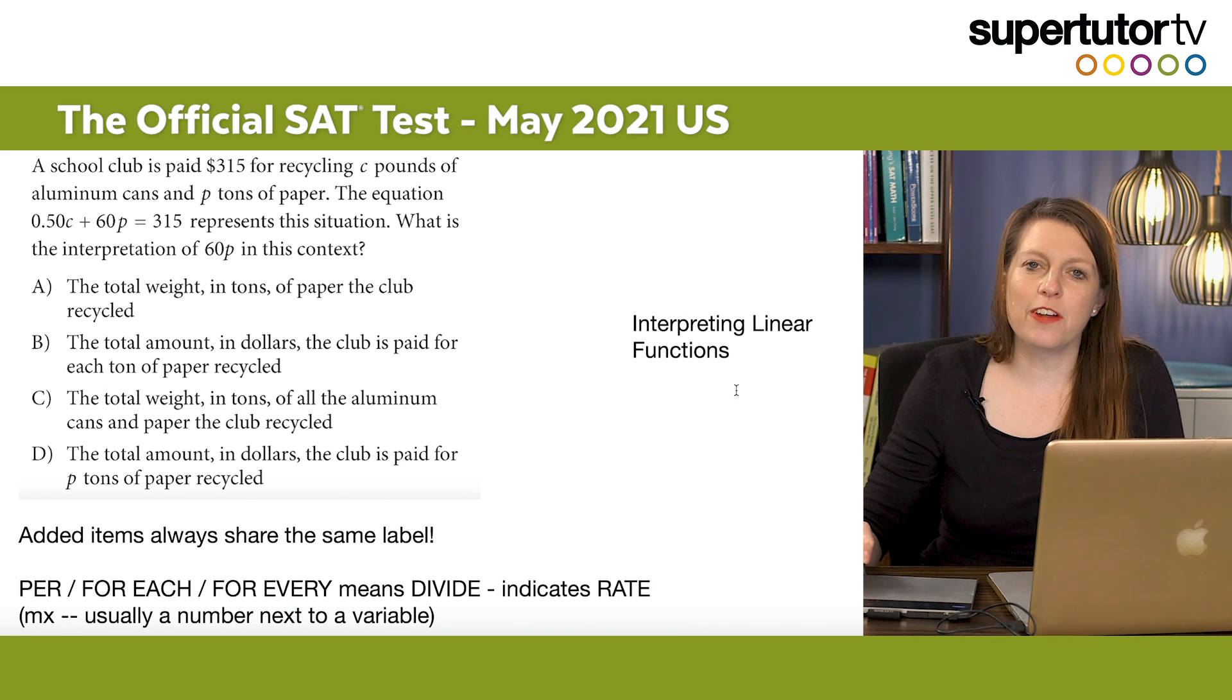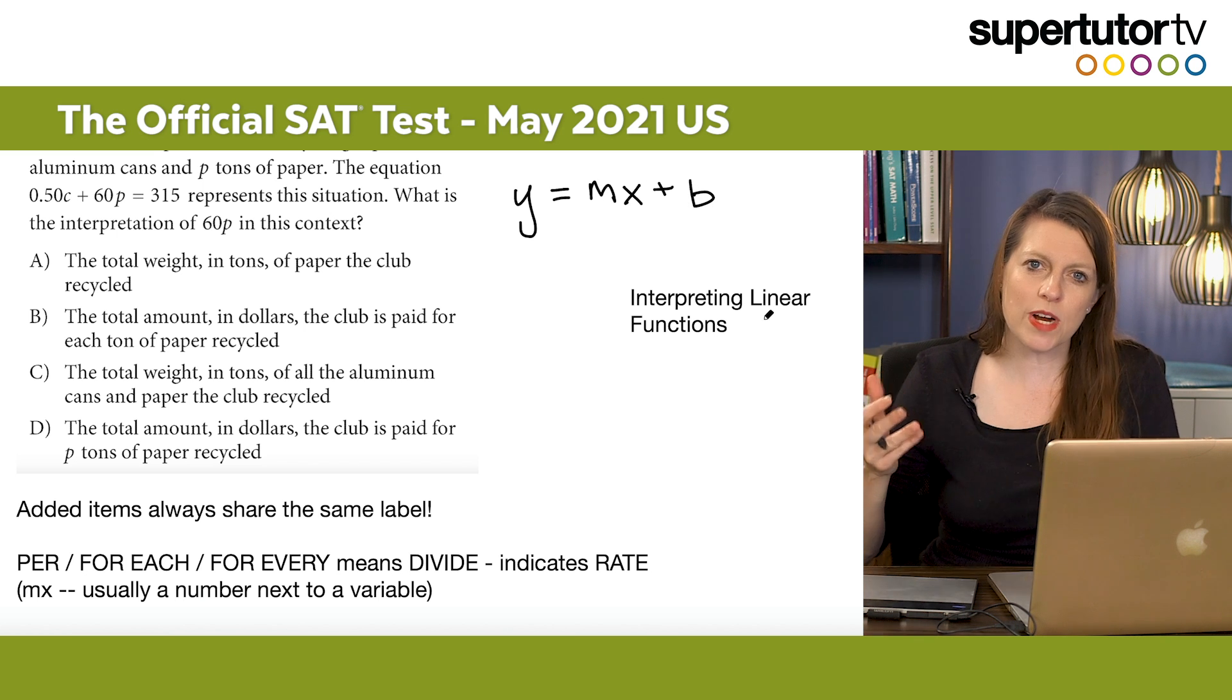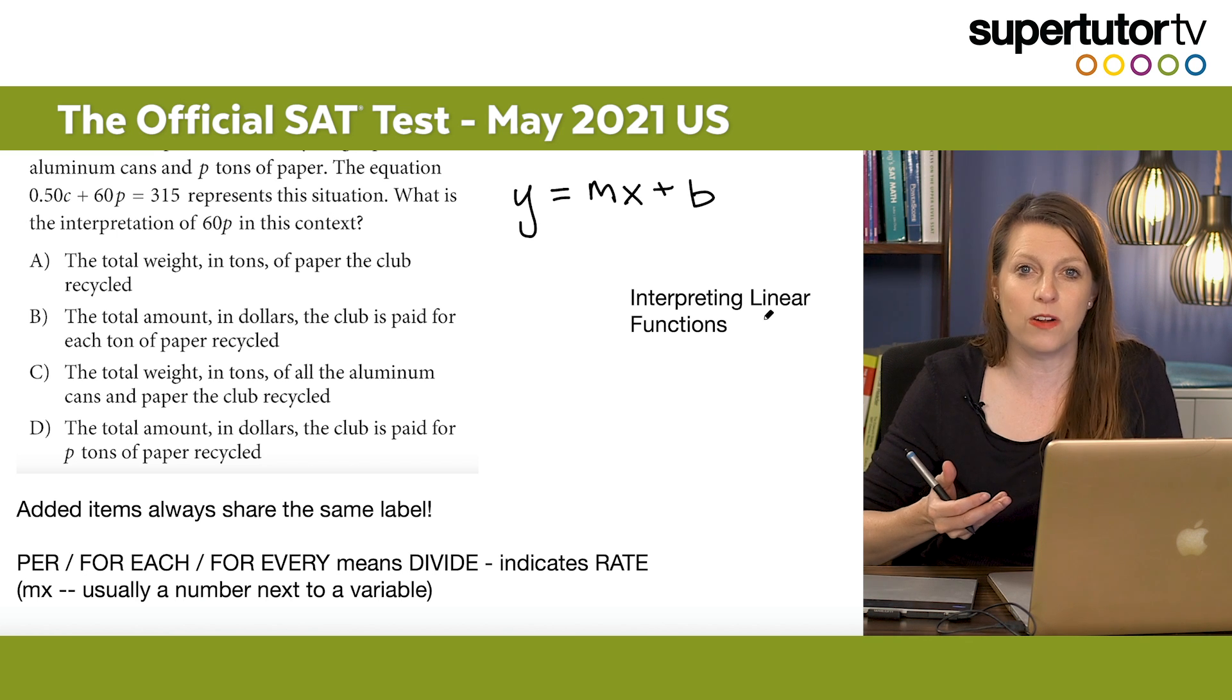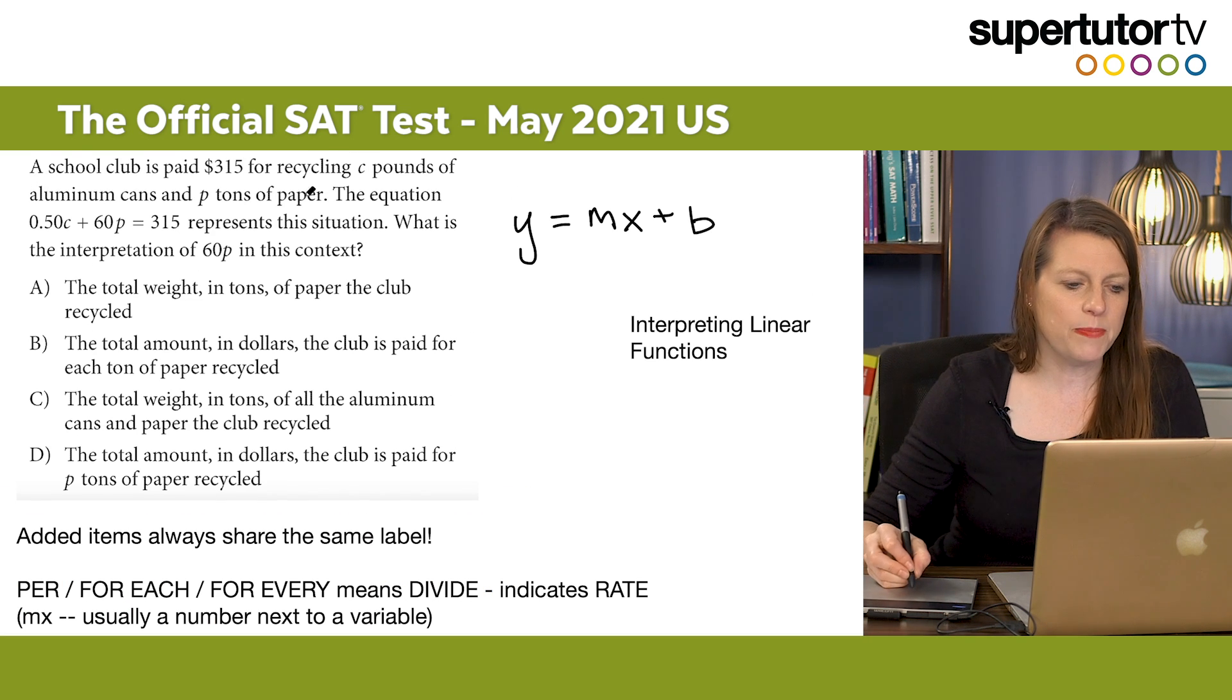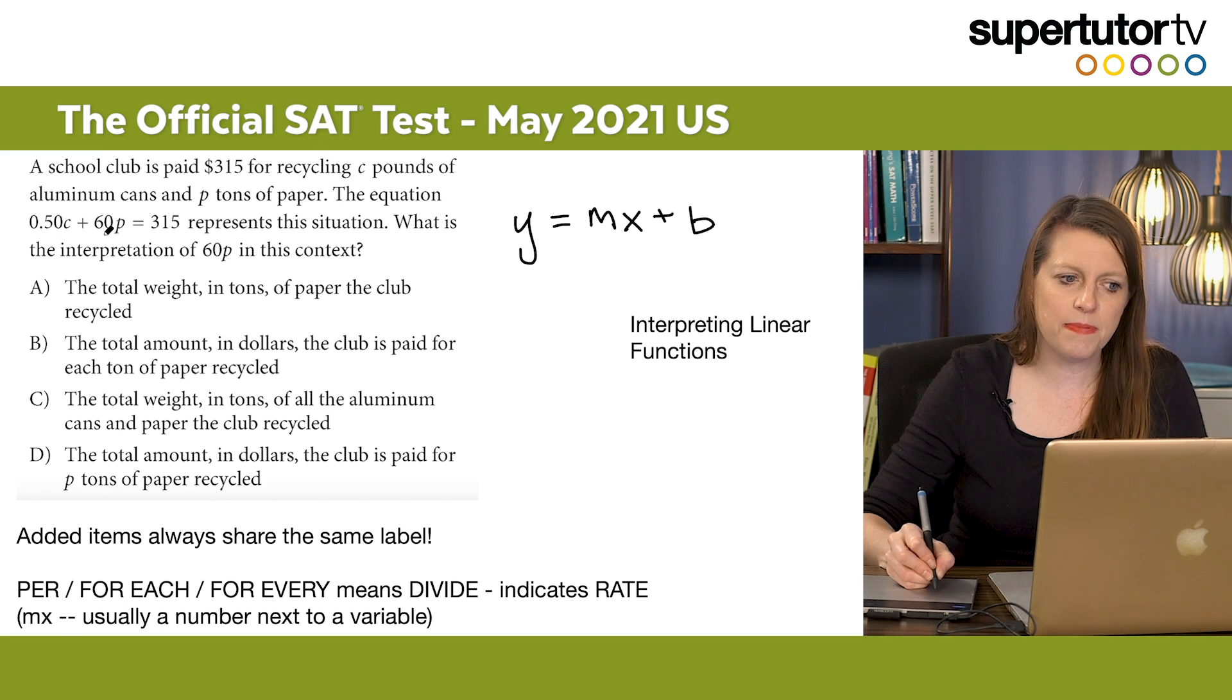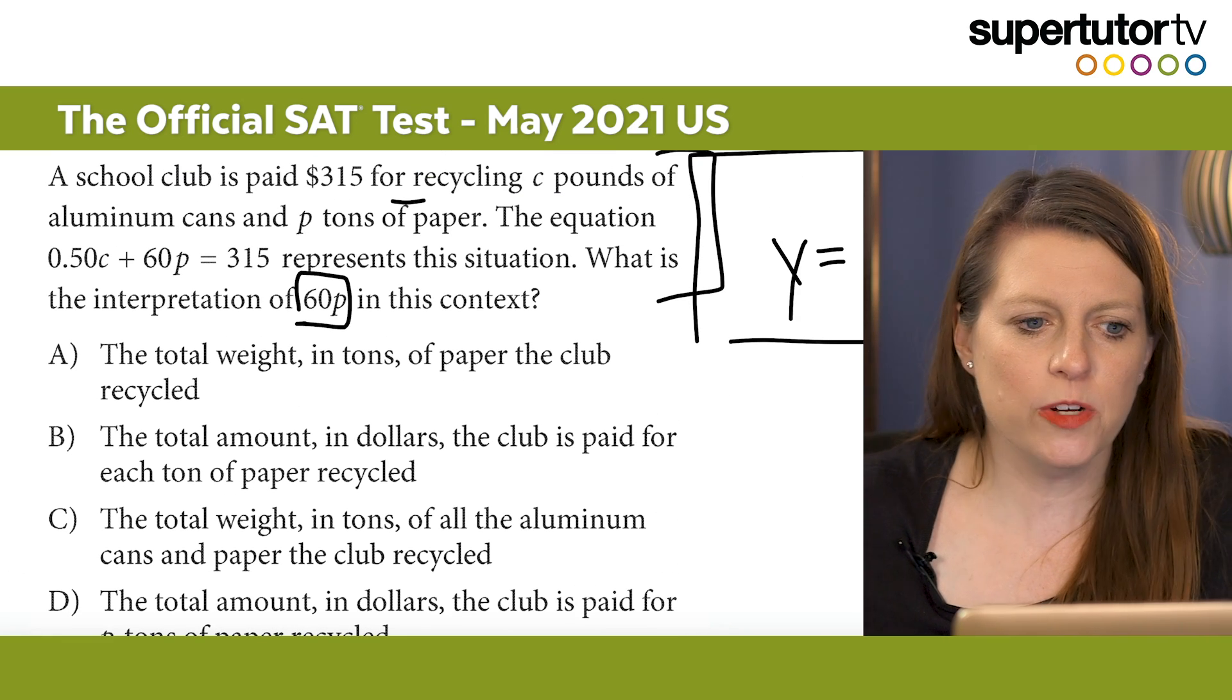So the next kind of question I'm going to talk about a shortcut for is a kind of question called interpreting linear functions. What these questions are is essentially linear equations that map onto word problems. Remember our linear equations usually take the form of y equals mx plus b and there's some shortcuts that I can teach you guys so that you can work your way around these problems really fast and really easy. I get into a lot of them in our online course. I have a nice video on this where I get much more in depth. I'm just going to show you a couple of these really quick tips here on this particular question that can help you speed up the way that you approach them.